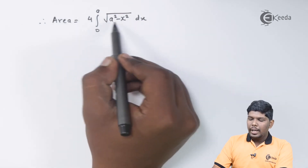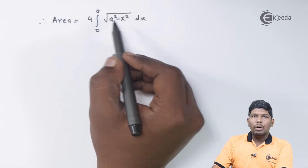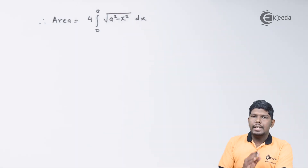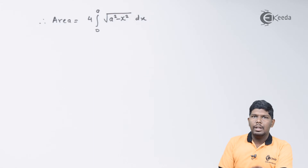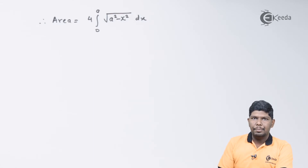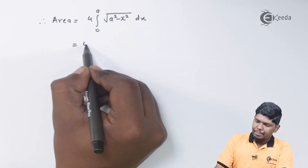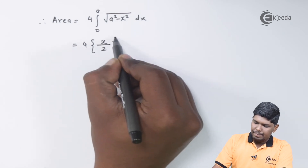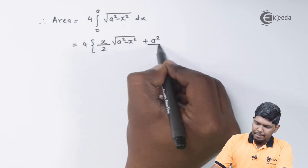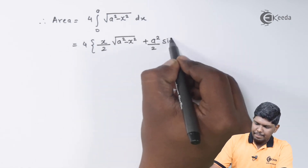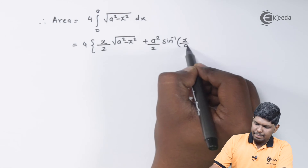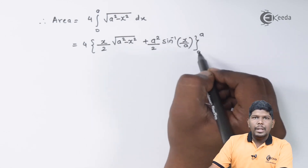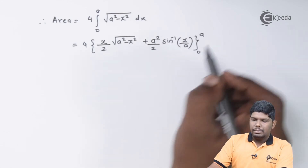We know that ∫√(a² − x²) dx = (x/2)√(a² − x²) + (a²/2) sin⁻¹(x/a). Applying this formula with limits 0 to a gives us the expression evaluated within those limits.